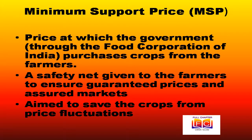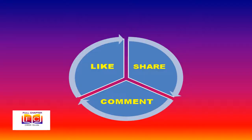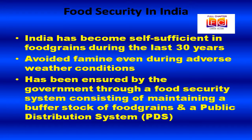Since the Green Revolution started in the early 1970s, India has avoided famine even during adverse weather conditions, becoming self-sufficient in food grains over the last 30 years due to the variety of crops grown. Food grains availability even in adverse conditions has been ensured by the government through a food security system consisting of maintaining a buffer stock of food grains along with a Public Distribution System (PDS) for food grains and other essential items.